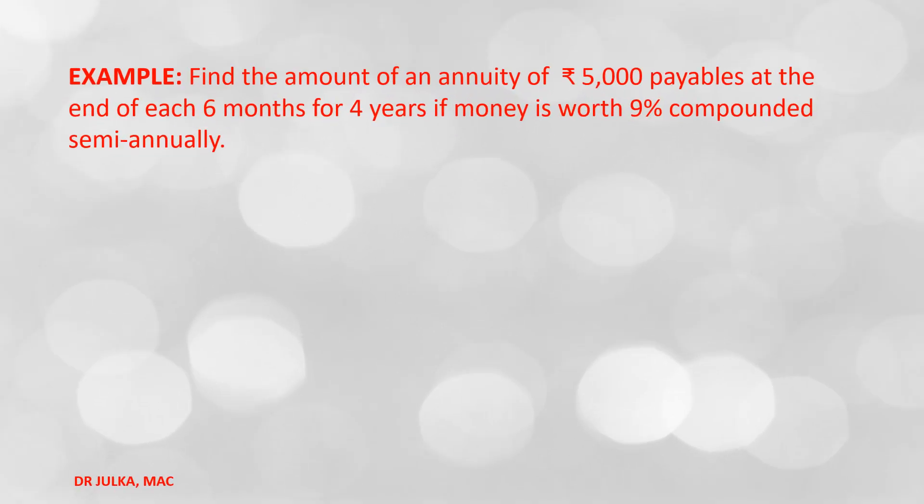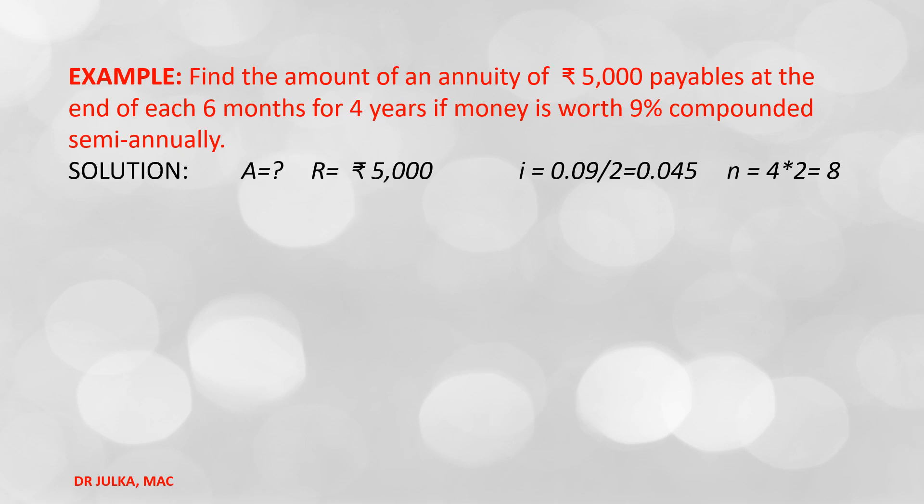Next example: find the amount of an annuity of Rs. 5,000 payable at the end of each 6 months for 4 years if money is worth 9% compounded semi-annually. In this example, annuity amount R = Rs. 5,000. Interest rate is 9% compounded semi-annually, so i = 0.09 / 2 = 0.045.